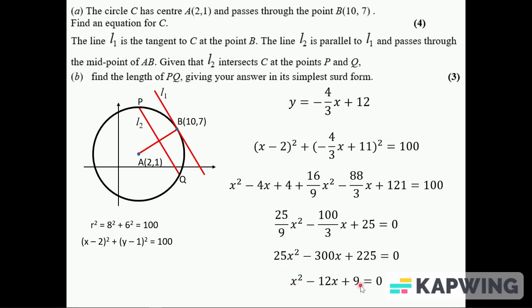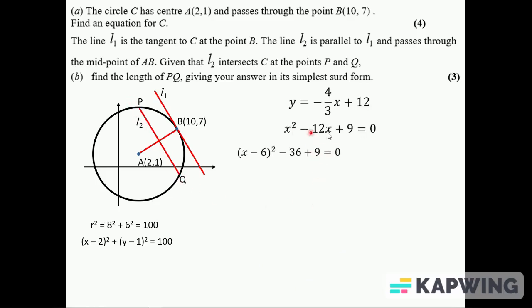So multiply by 9, I get this. And then divide it by 25, I get this quadratic. And this is going to give me the two x values of P and Q. Complete the square on it because we want it in simplest form. The calculator will do this of course these days, but...